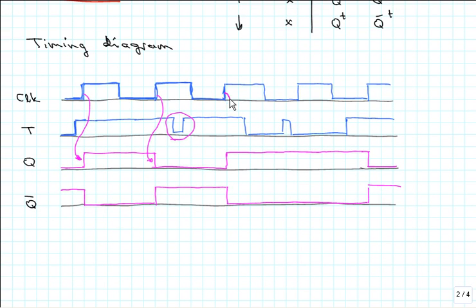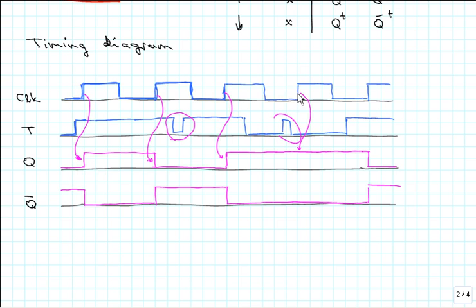At the next point T is still high, so we toggle again and Q-not is the inverse of Q. A transition that does not fall at the positive edge of the clock is disregarded. Then at this point we have T equal to zero at the time of the positive clock edge, so the Q output remains unchanged. At the last positive transition of the clock pulse T is one again, so we toggle and the output goes back to zero, with Q-not being the inverse of Q.